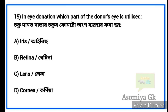Next question: Which part of the donor's eye is utilized? Option D: Cornea. The cornea is the part of the donor's eye that is used.